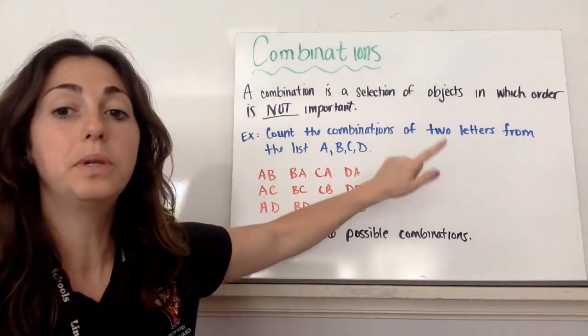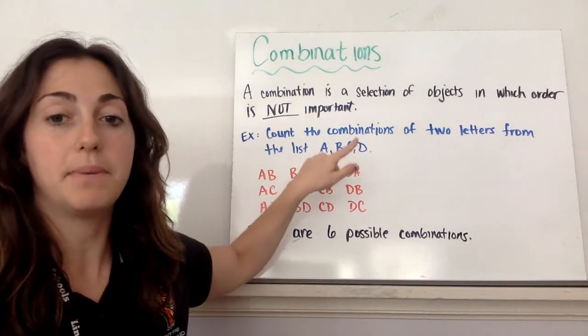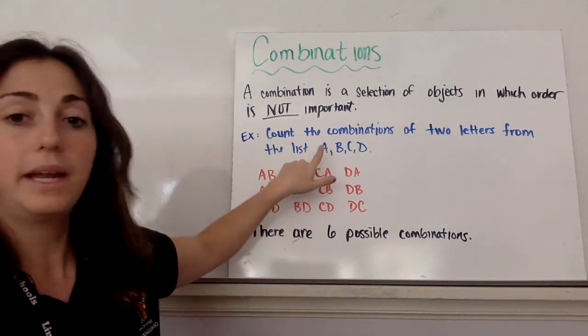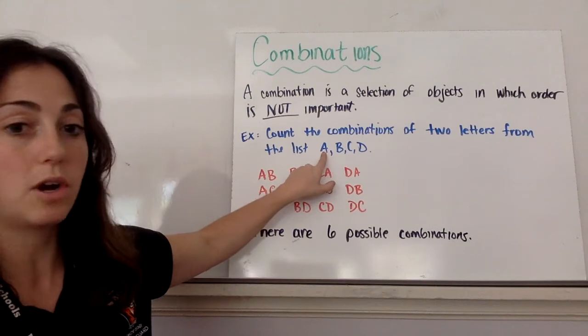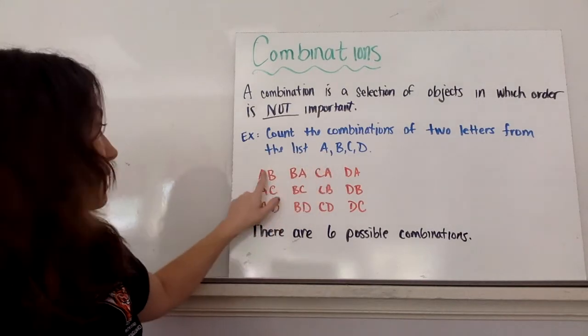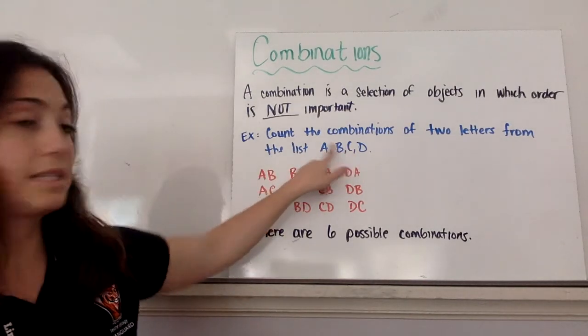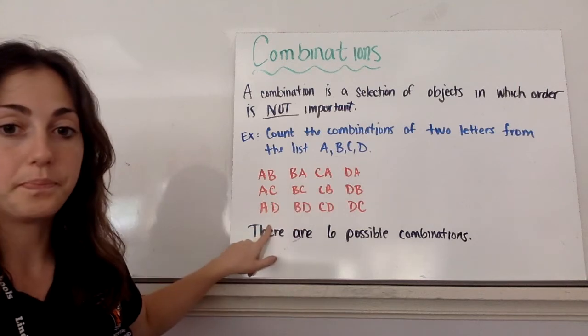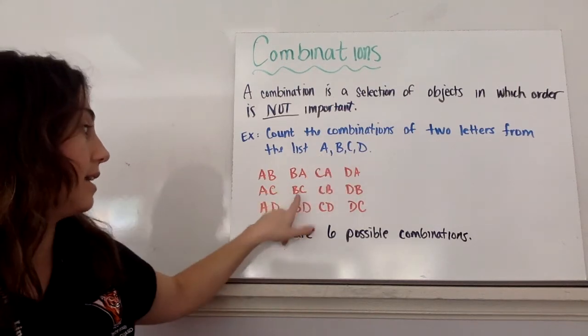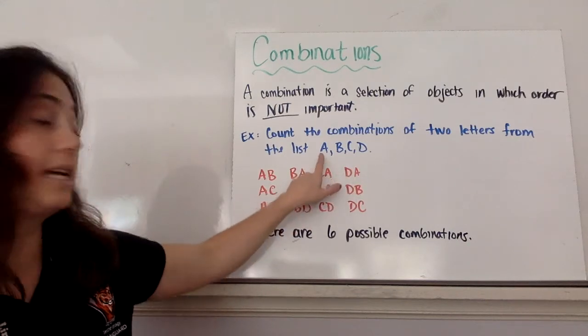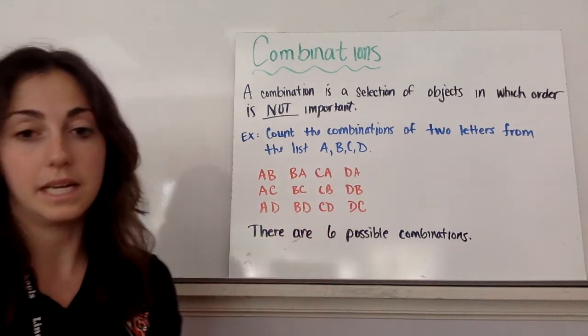let's count the combinations of two letters from the list A, B, C, D. So I made a list of two-letter combinations using each letter. So I started with A, and I combined A with B, with C, and then with D. Then I started with B, and I combined it with the other three letters A, C, and D. Then I went to C, and then I went to D.